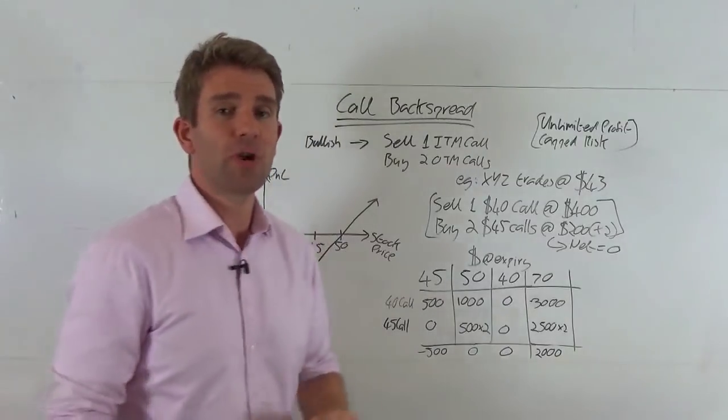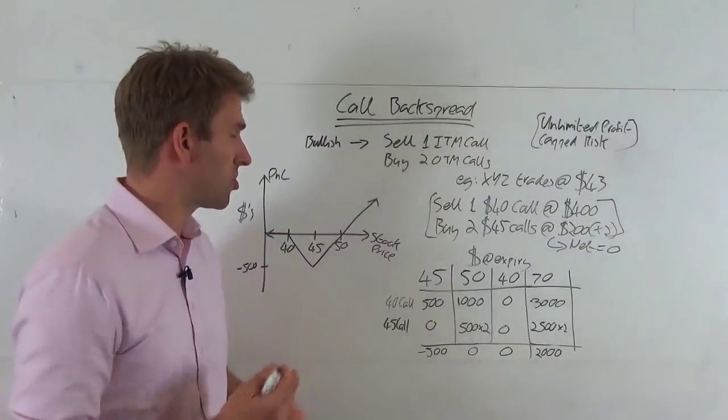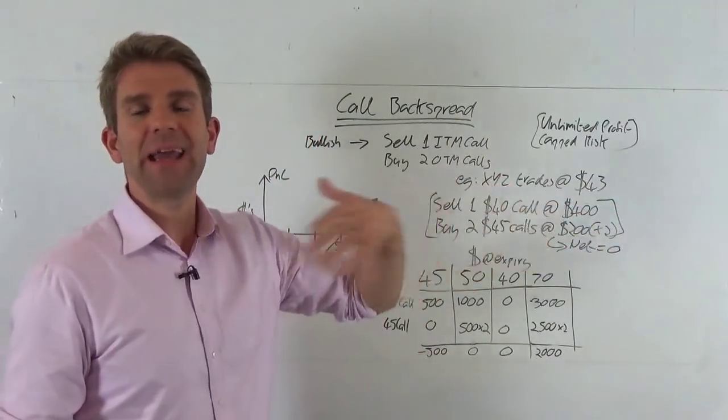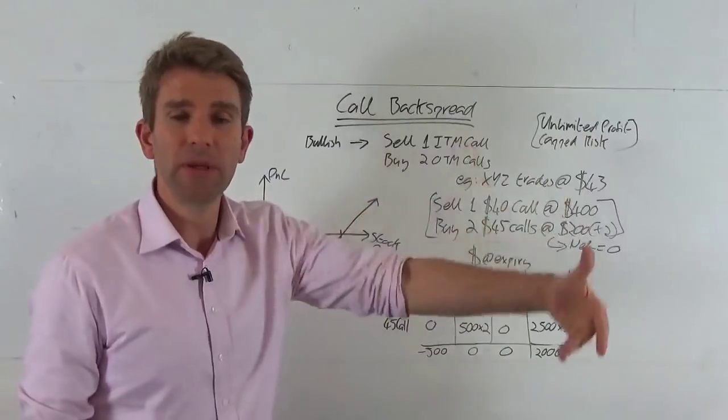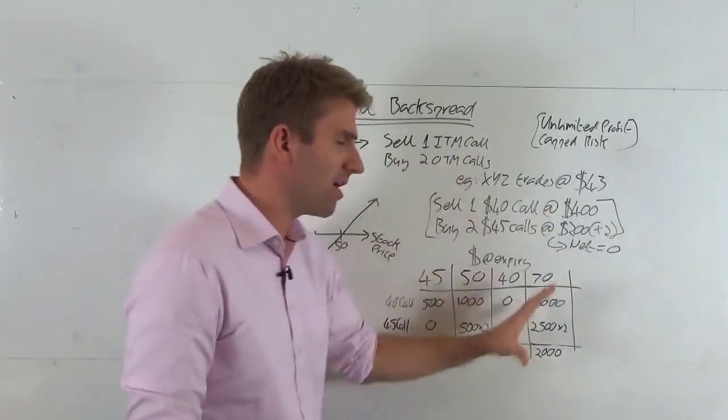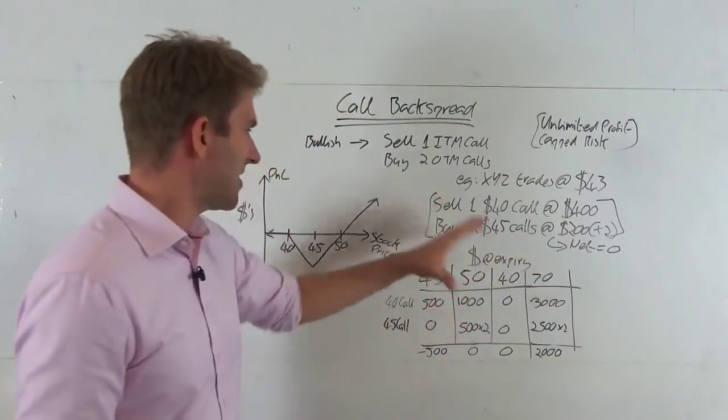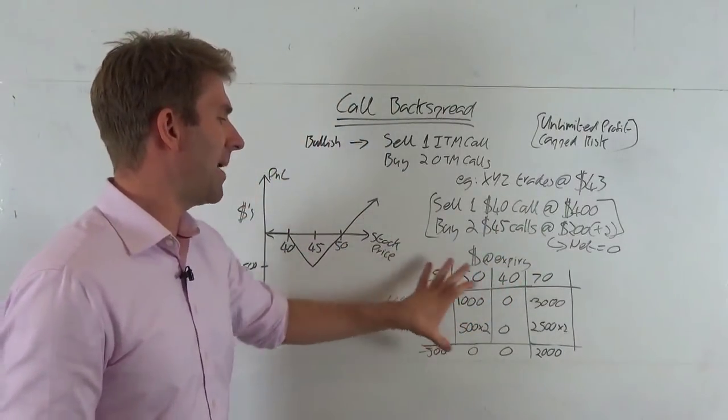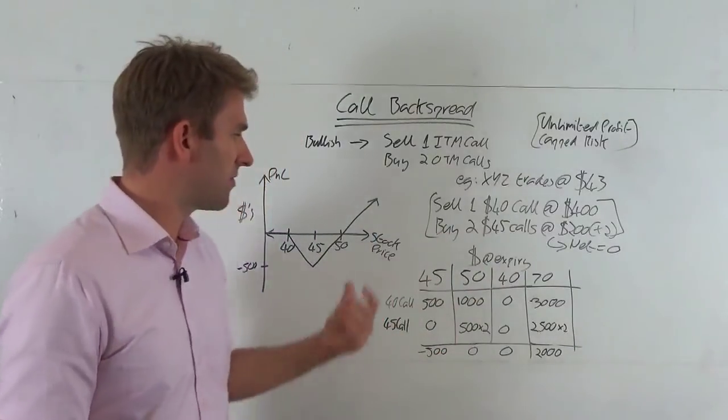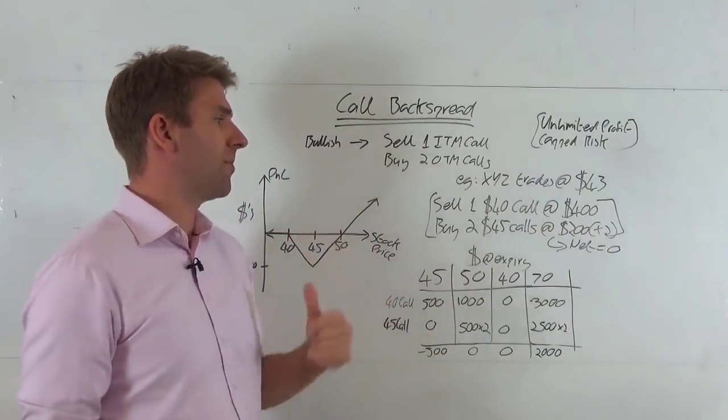Imagine stock XYZ. It could be anything, but we'll use it as stock in this example. It trades at $43. We pick an expiry. That could be a week, a month, three months, three years, whatever options contract we're trading. The expiry is the same. At expiry, we want to see what happens and how much money we're going to make or lose for different strike prices, or different expiry prices compared to the strikes we buy and sell.